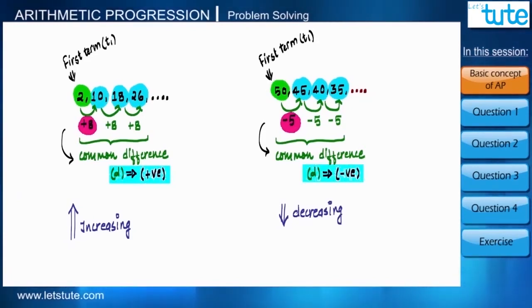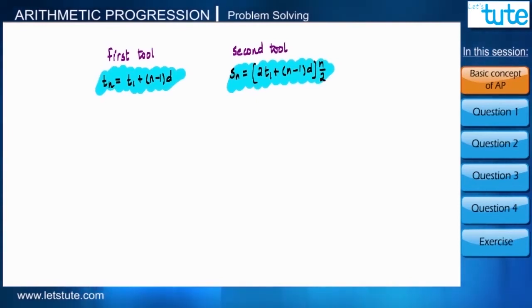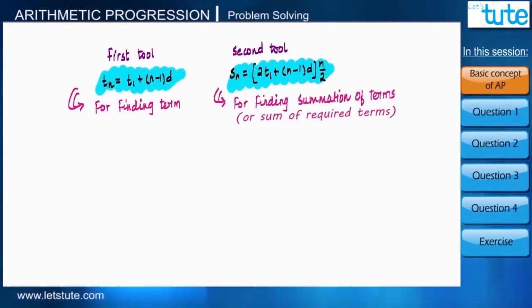Here we must note that if the sequence is increasing, the common difference is positive, and if the sequence is decreasing, common difference is negative. Previously we have also learned two basic tools: one is for obtaining any term of the sequence, and other one is for calculating summation of all the terms of the sequence.